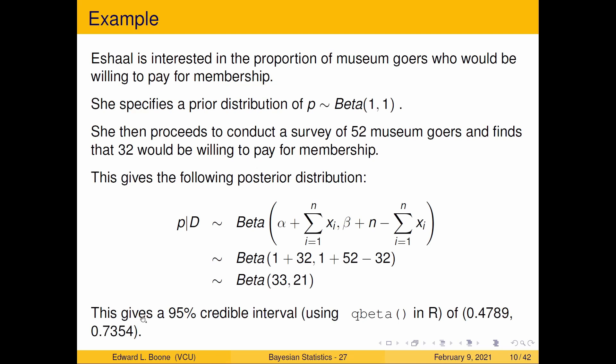Pretty easy. And this gives a 95% credible interval, if we use q beta in R, of 0.4789 to 0.7354. Let's look at a different approach.